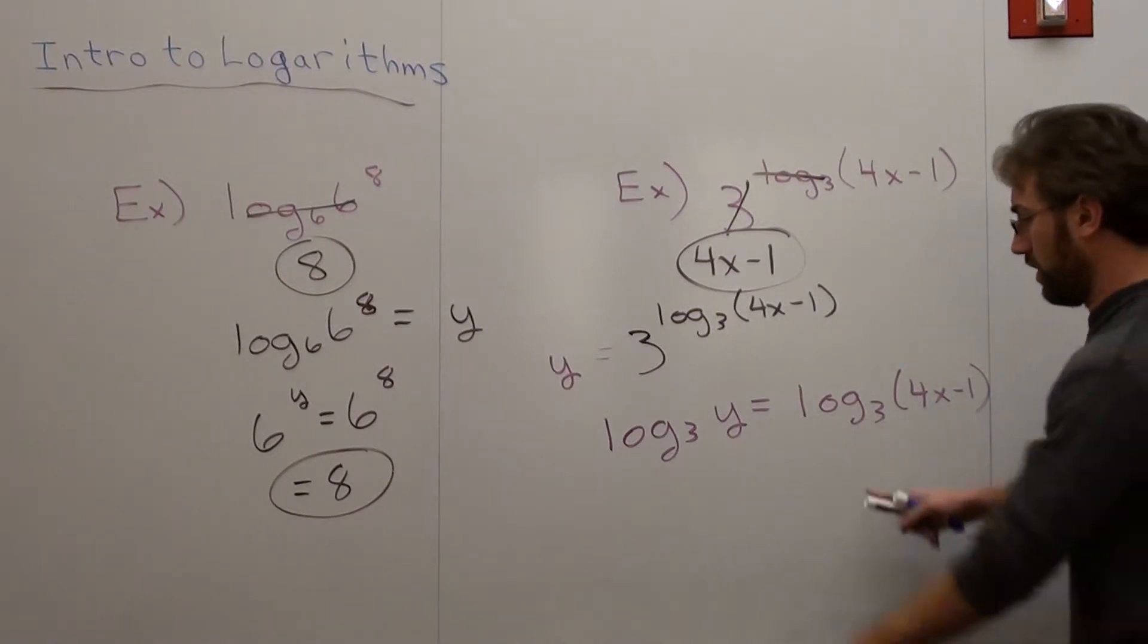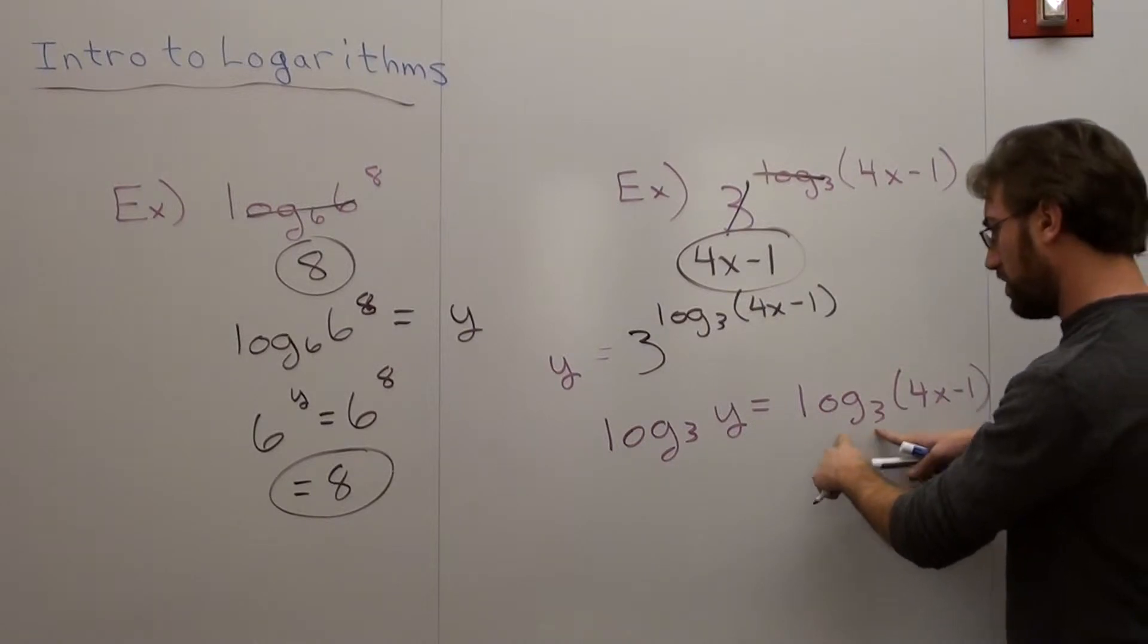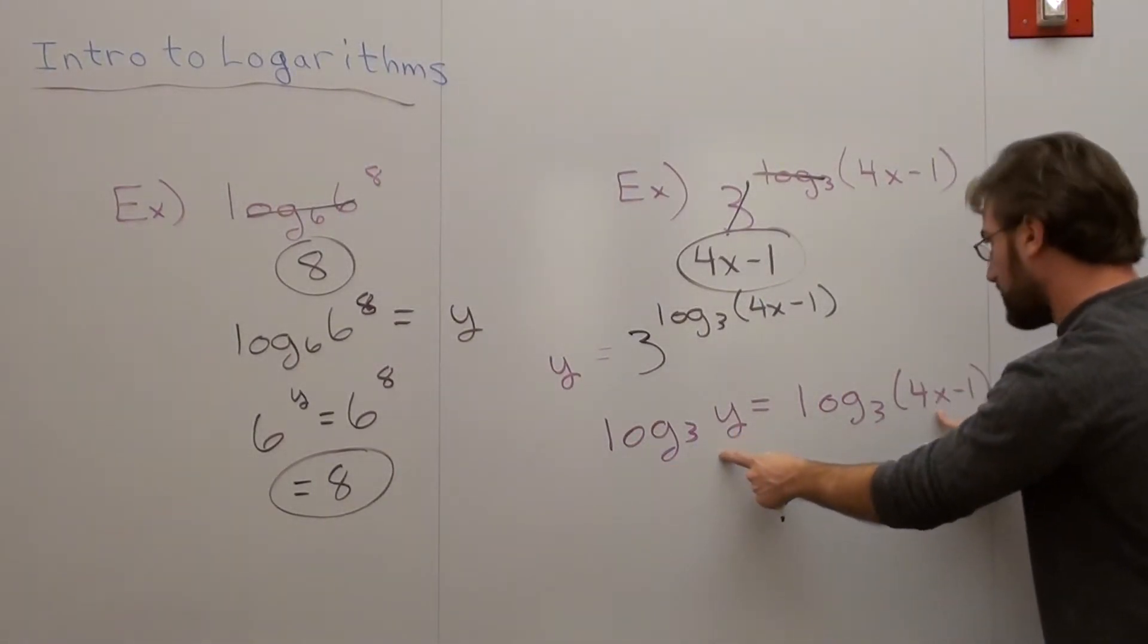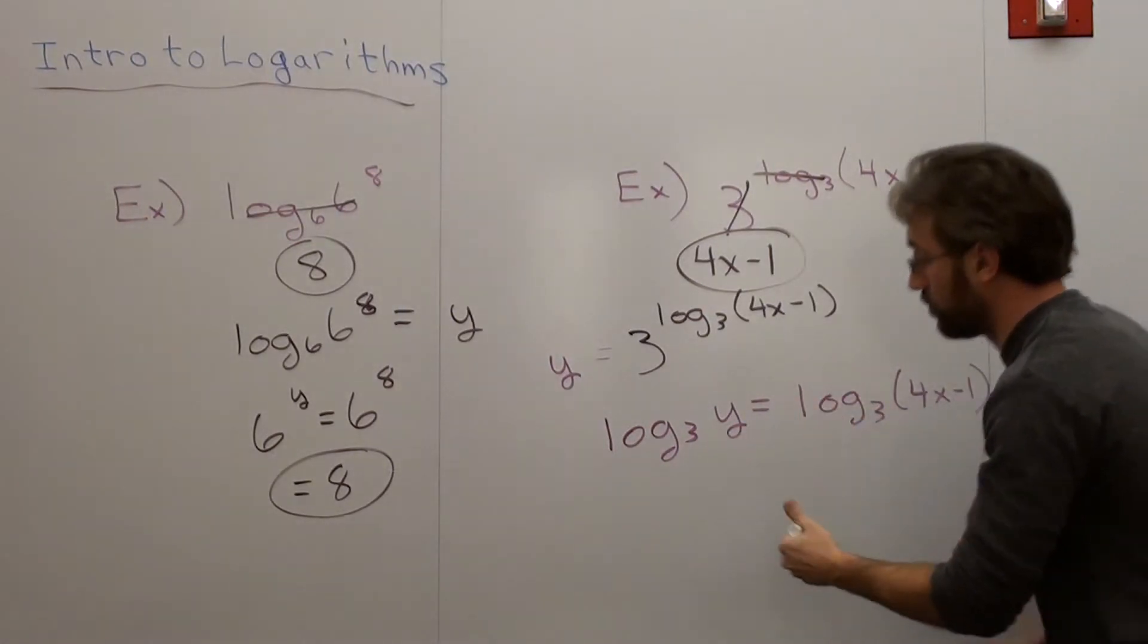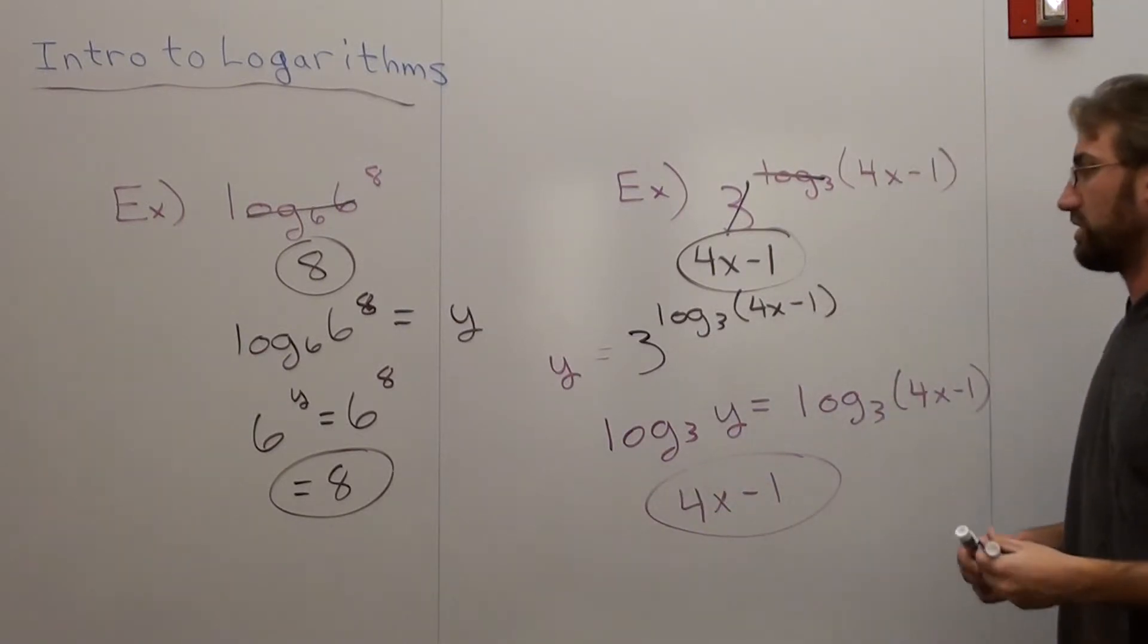Okay, log base 3 equals log base 3, so these are the same. Therefore, y equals 4x minus 1. What do I have to put in for y to make that true? 4x minus 1. That's the answer.